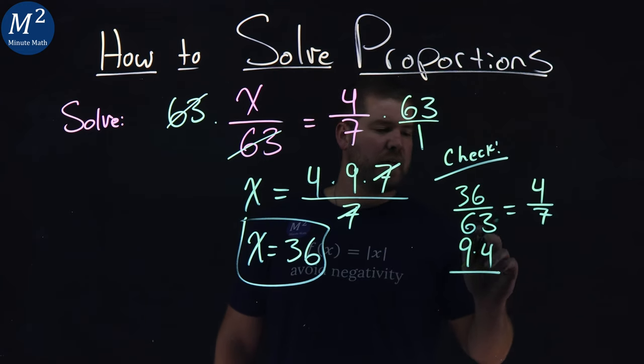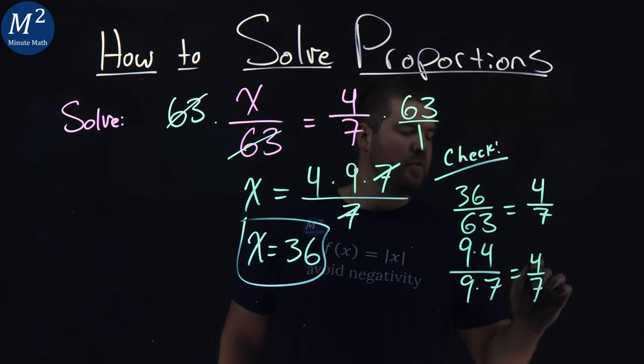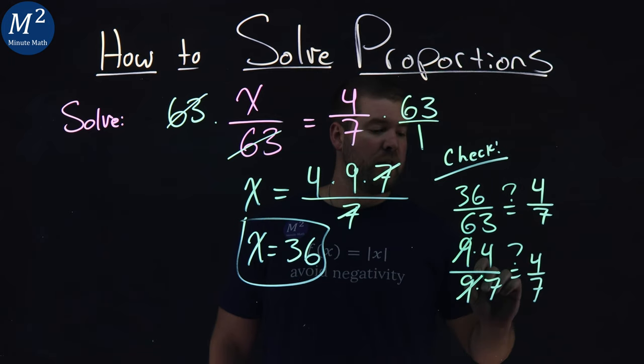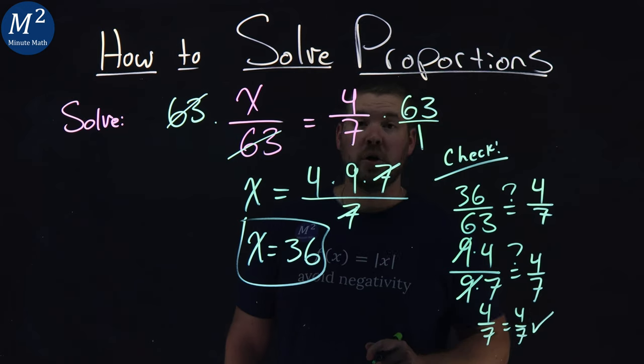63 is 9 times 7, and we're going to see if that's equal to 4 over 7. 9s cancel on the left, leaving me 4 over 7 equals 4 over 7, and we're good.